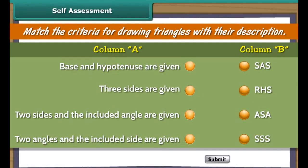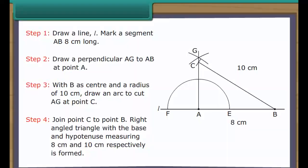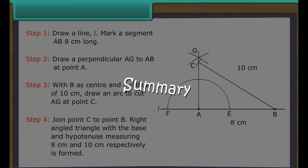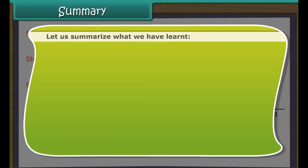Self-assessment: Match the criteria for drawing triangles with their description. Summary: In this lesson, we learned the construction of a line parallel to a given line, construction of a triangle whose three sides are known (SSS), construction of a triangle whose two sides and the angle between them are known (SAS), construction of a triangle whose two angles and the side between them are known (ASA), and construction of a right-angled triangle whose one leg and hypotenuse are known (RHS).